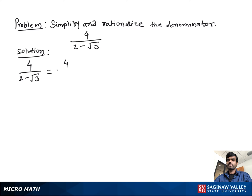This is binomial form, so we multiply both numerator and denominator by the conjugate of the denominator, which helps us get a rational number. The conjugate of the denominator is 2 plus square root 3.